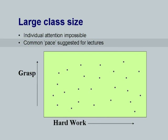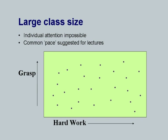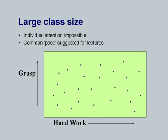Secondly, a common pace gets suggested for all lectures. When I plot the ability of individuals attending a course to grasp the material and their ability to do hard work, I get a spread of points on a graph where one axis represents hard work ability and the other represents grasping ability. By grasp I do not mean only inherent intellectual capability — it also depends upon the level of preparedness, motivation, and what I call sincerity of purpose and tremendous passion for learning.